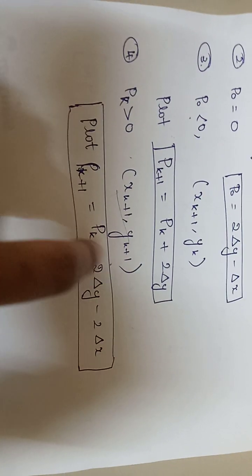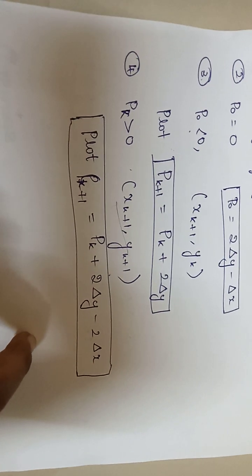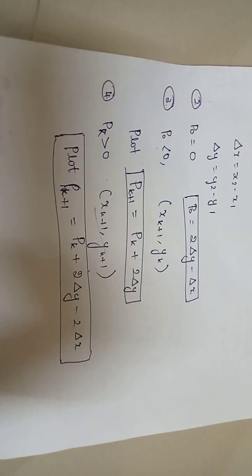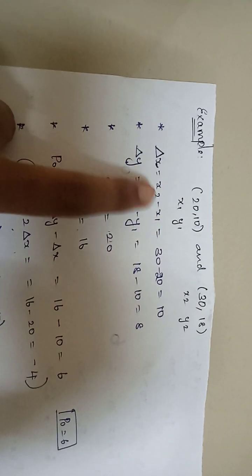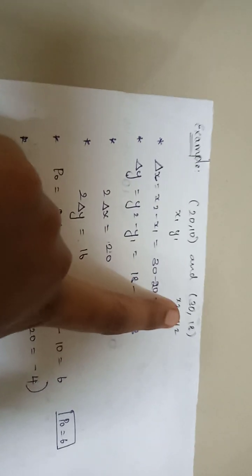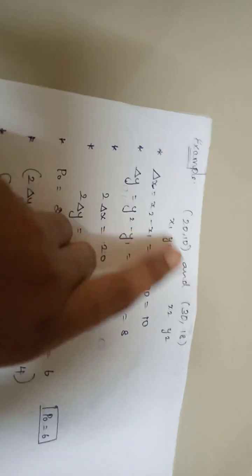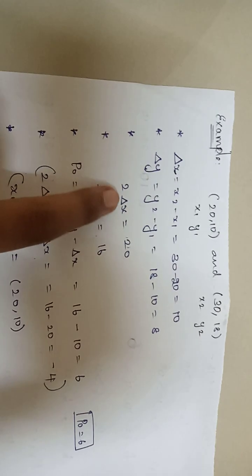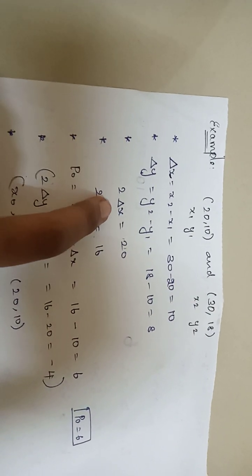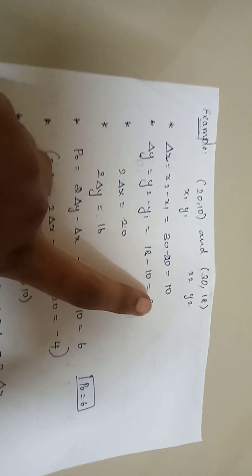Now I will show you an example. The first point is (20, 10) and the second point is (30, 18) — these are x1, y1, x2, and y2. First, find Δx = x2 minus x1 = 30 minus 20 = 10. Then find Δy = y2 minus y1 = 18 minus 10 = 8. Also calculate 2Δx = 20 and 2Δy = 16.